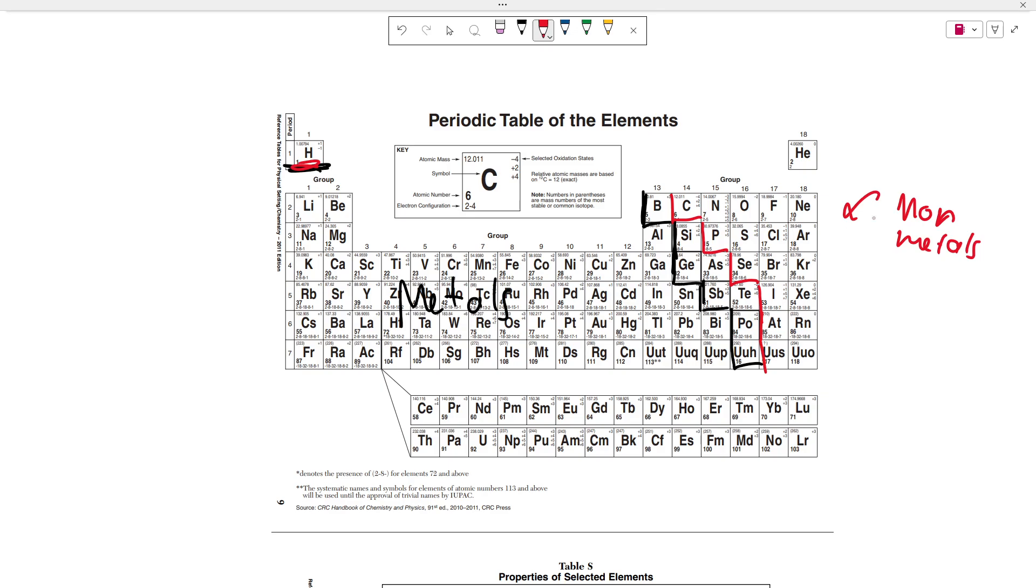In between these two, you have what we call metalloids, which are kind of weird in the sense that they both have metallic and non-metallic properties, but that's generally not tested on the regions. Just know that these are metalloids and they kind of have both metallic and non-metallic properties.